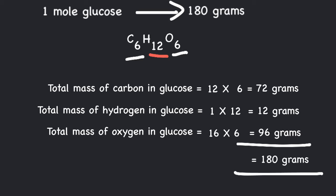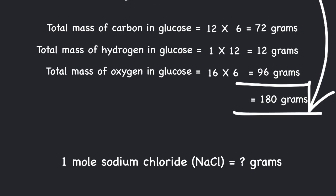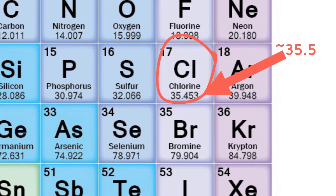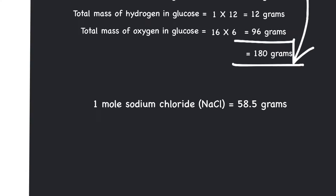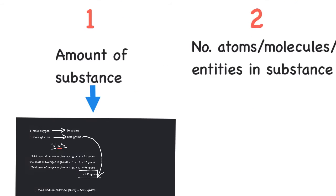So one mole of glucose weighs 180 grams. Can you find the mass of sodium chloride? Look up the atomic masses of sodium and chlorine in the periodic table, add them up, and you will get 58.5 grams. That was easy!